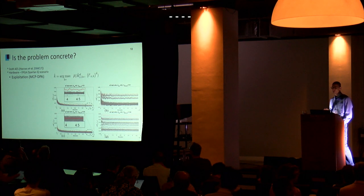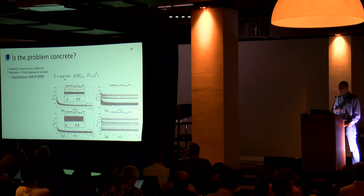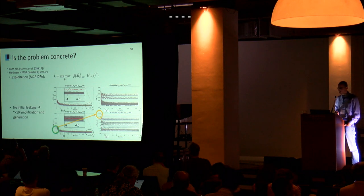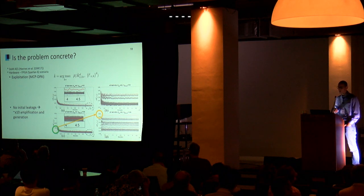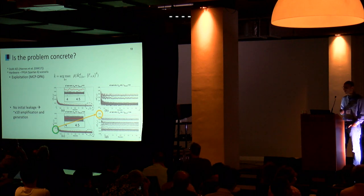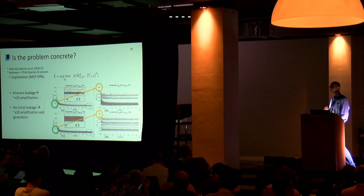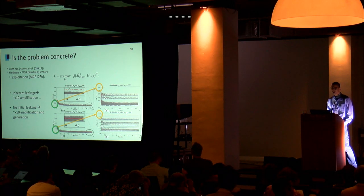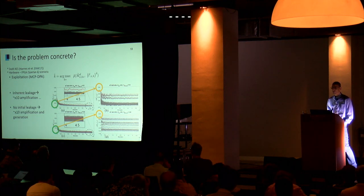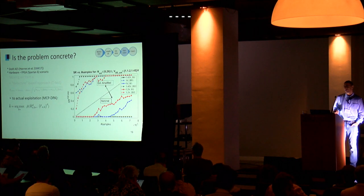With moment-correlating profiling DPA, we see the first moment in different scenarios as a function of number of traces. There were cases where we weren't able to retrieve the secret key, and after amplification we were able to. We increased the correlation values by a factor of 10, done with far fewer traces. Where we already saw some leakage in the first moment, with aggressive amplification we get it far faster and stronger.